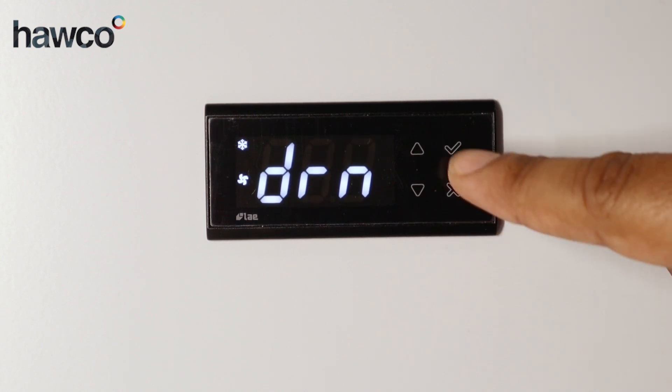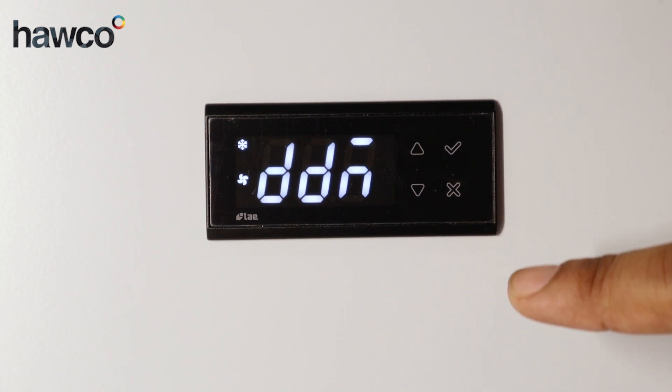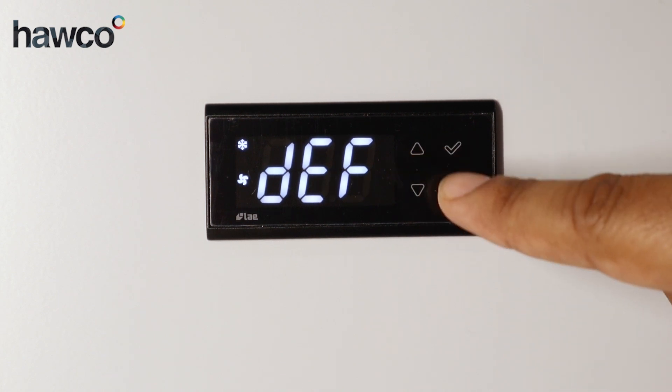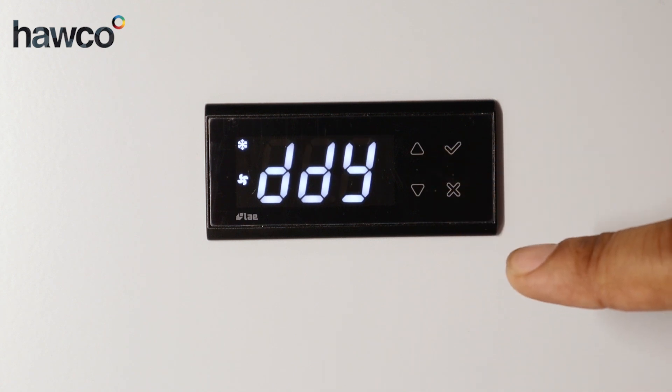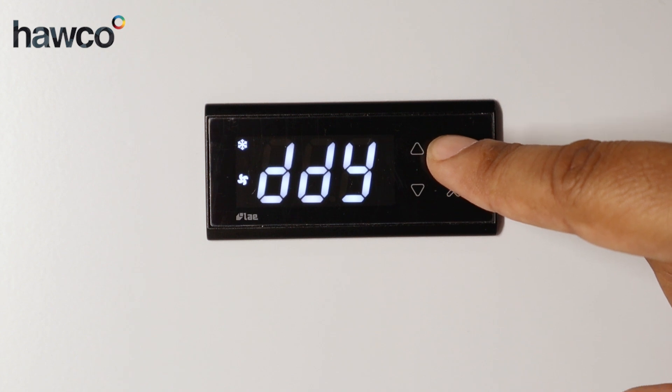DRN, which is drip time, set to zero. DDM, which is set to display during defrost, is set to DEF. DDY is a step for the delay for the display, which is set to three minutes delay.